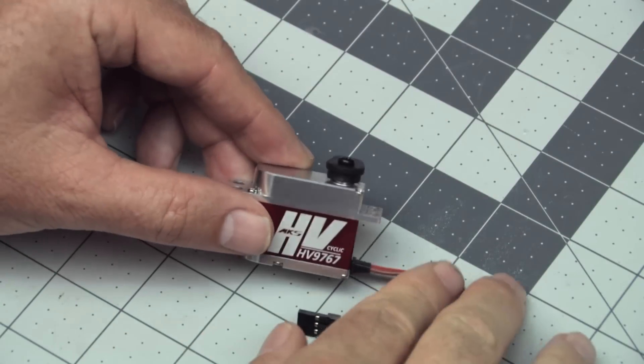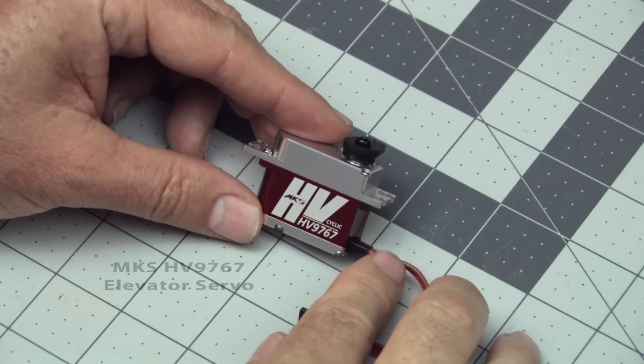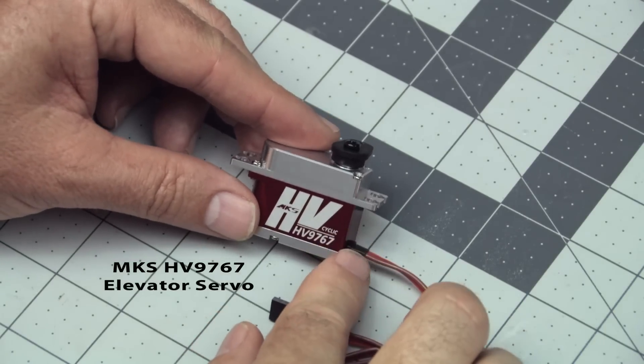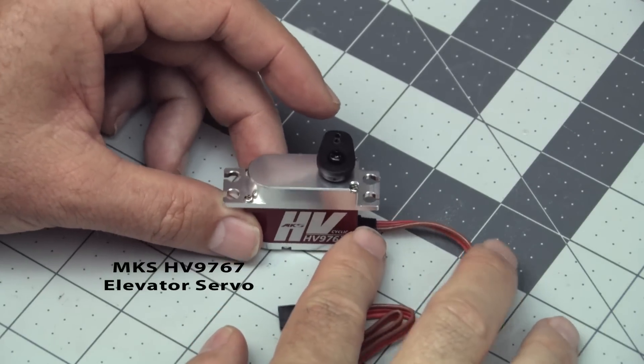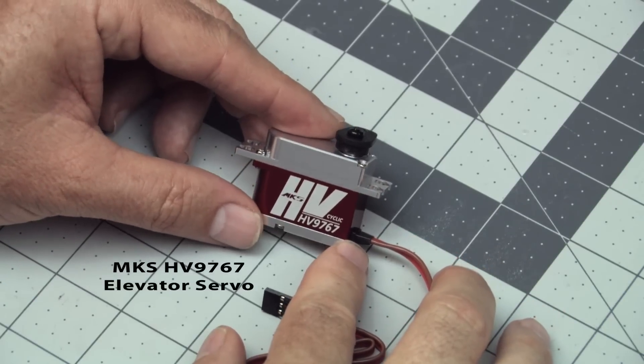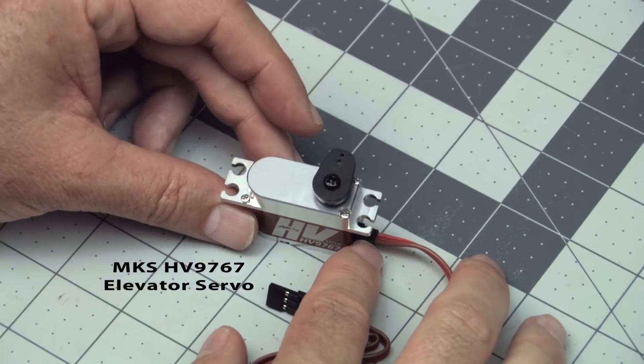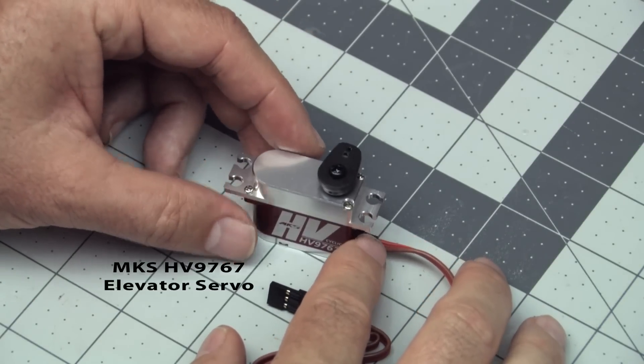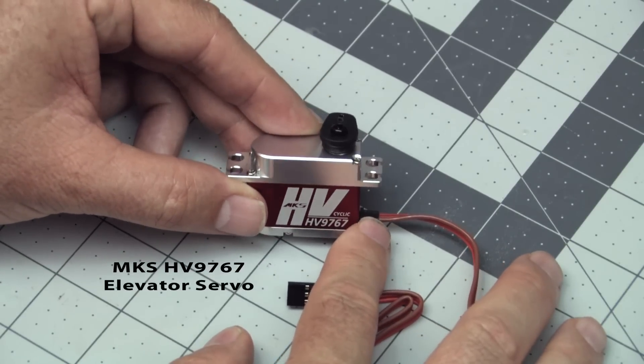Now since this plane is only getting the best servos, I'm using the MKS for all the servos on this airplane. And this is my elevator servo. Kind of an unusual choice here. This is the HV 9767. It's got 130 ounces of torque. Very fast, very strong servo. Why do I pick something so big for the elevator?